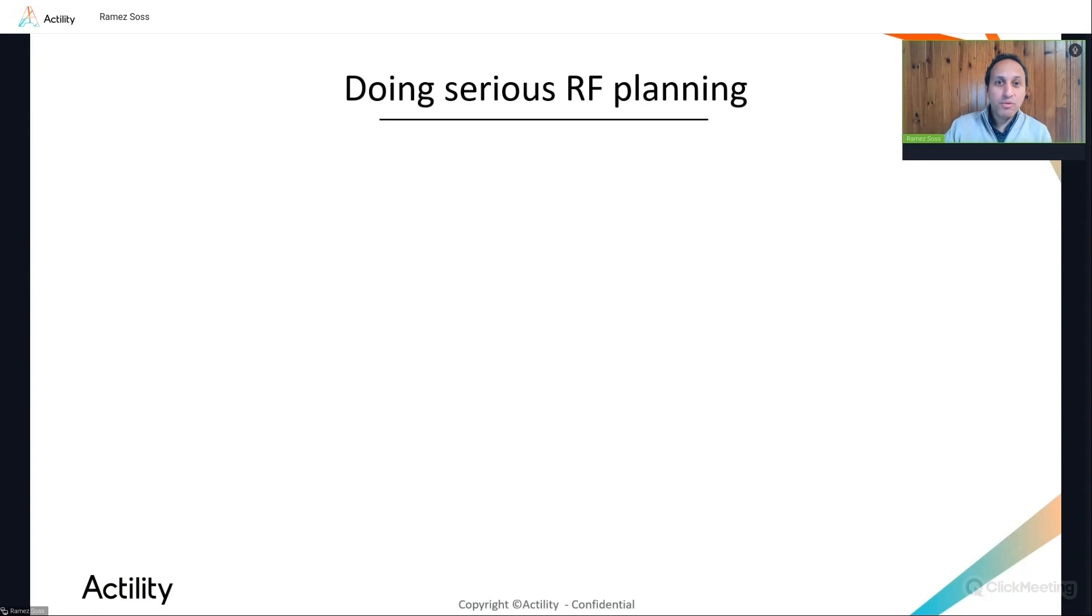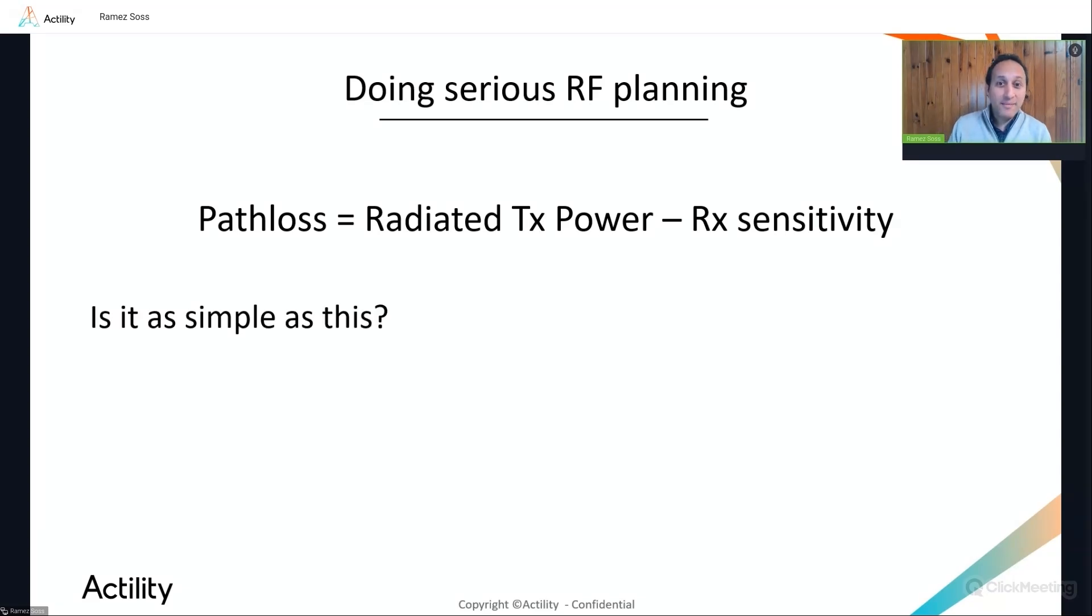Now that we have set the scope, the next question would be, how to do a serious RF planning? One would say, LoRa RF planning is quite simple. I can easily derive the expected path loss by subtracting the receiver sensitivity from the radiated power of the transmitter. Then, I can convert this path loss into cell range by using a propagation model that is appropriate for the sub-Gigahertz propagation. Is the exercise really that simple? From my 18 years of experience in RF planning, I can definitely answer nope. And I will explain you why in the coming slides.